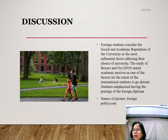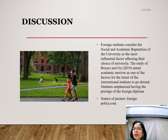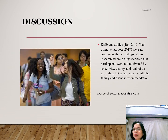Foreign students considered the social and academic reputation of the university as the most influential factor affecting their choice of university. The study of Boyasi and Oz stated academic motives as one of the factors for the intent of international students to go abroad. Students emphasize having the prestige of a foreign diploma. This finding is consistent with studies that determined academic reputation as one of the most important factors in selecting universities. In contrast, studies by Tan, Chai, Trang, and Kabori in 2017 found that participants were not motivated by selectivity, quality, and rank of an institution, but rather mostly by family and friends' recommendations.